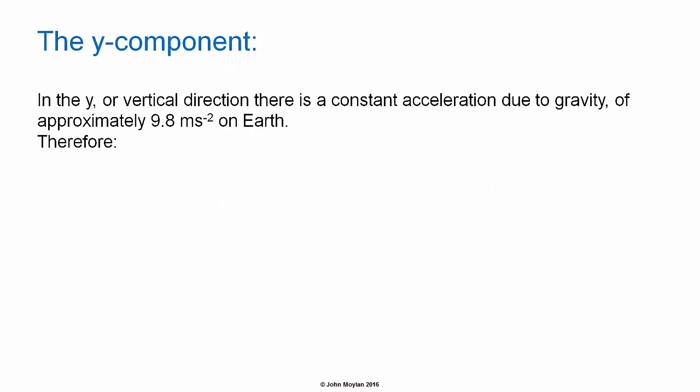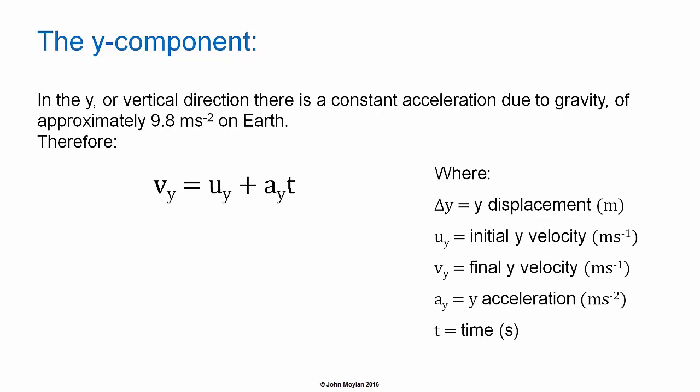In the Y or vertical direction, there is a constant acceleration due to gravity of 9.8 meters per second squared on Earth. Therefore, V subscript Y equals U subscript Y plus A subscript Y times T, where V subscript Y is the final velocity in meters per second, U subscript Y is the initial velocity in meters per second, and A subscript Y is the Y acceleration in meters per second squared. And T is time.